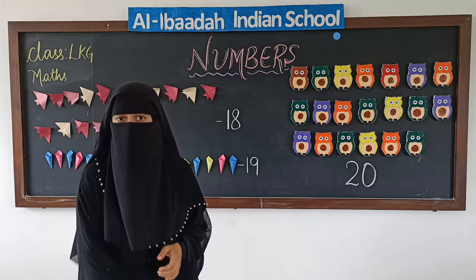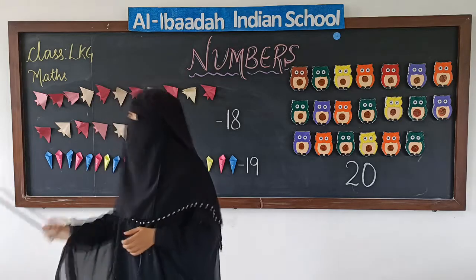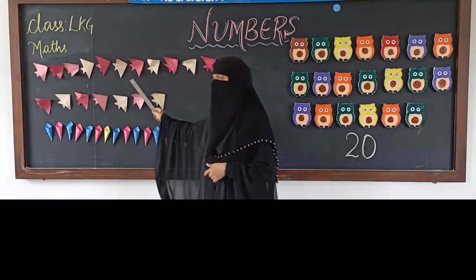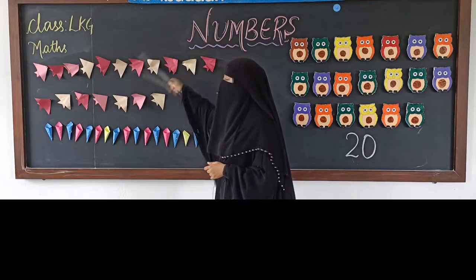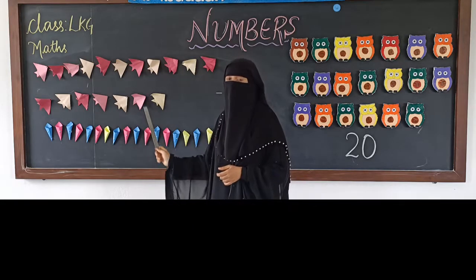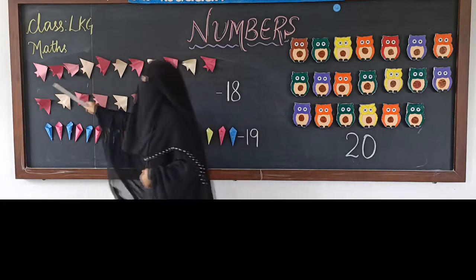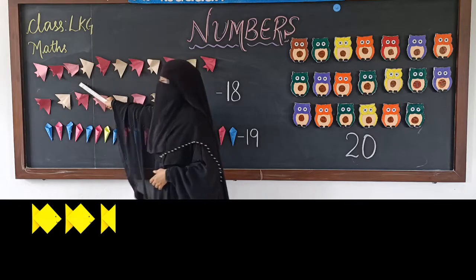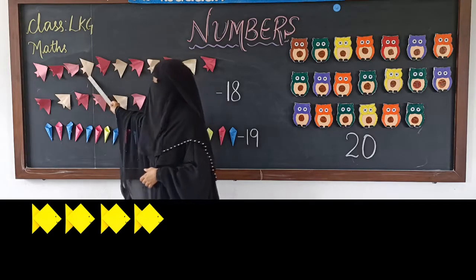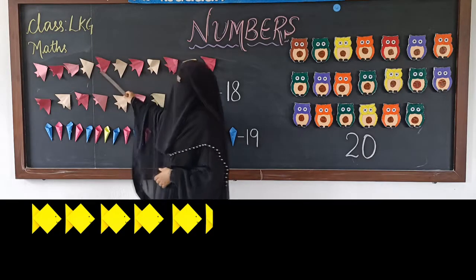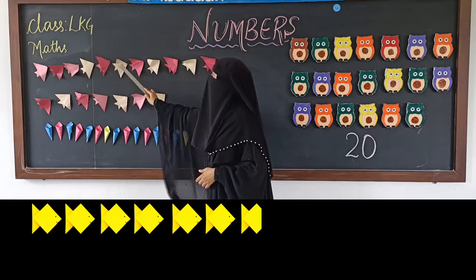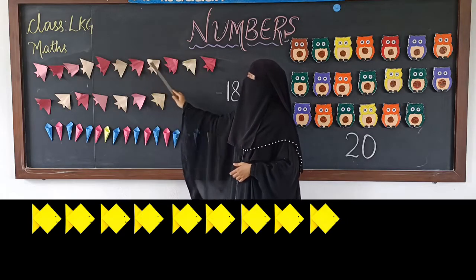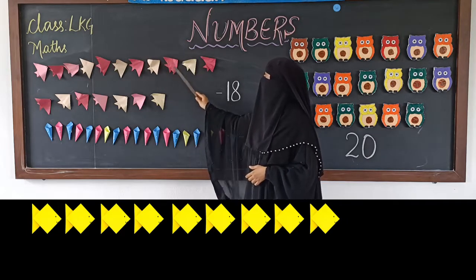Let us count here — let us count fishes. These are fish, right? Let us count how many fishes altogether. 1, 2, 3, 4, 5, 6, 7, 8, 9, 10, 11, 12...